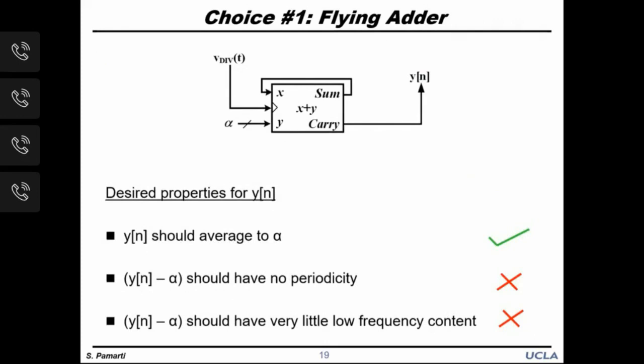Let's see how well the flying adder does in terms of what we want from y[n]. As we just saw, y[n] is clearly periodic. Furthermore, for small values of alpha the period is very long, meaning there is substantial low-frequency content. So this is a bad choice — but surprisingly, it is a common one.